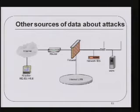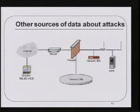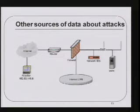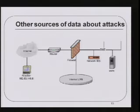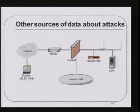The point is that intrusion detection is good — a Bayesian detection rate of 0.80 is far better than nothing. But there are other sources of information about attacks that can also be very worthwhile. Your router is going to have logs that give you valuable information. And if you ever take a SANS course, they will tell you the most single valuable source of information about network attacks is your firewall.